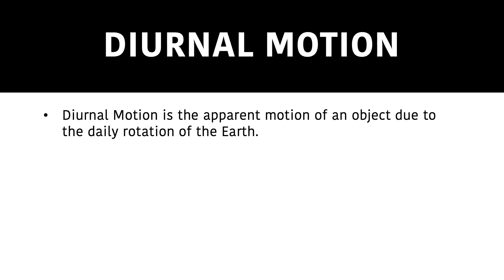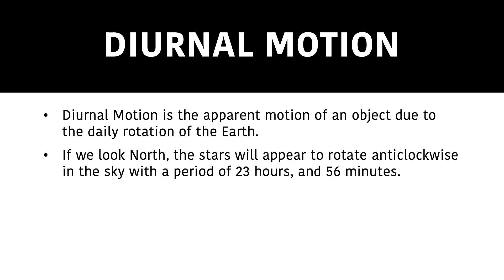Diurnal motion is the apparent motion of an object which is due to the daily rotation of the Earth. If we look towards the north, the stars will appear to rotate in the sky with a period of 23 hours and 56 minutes, as covered before — that is equal to one sidereal day.